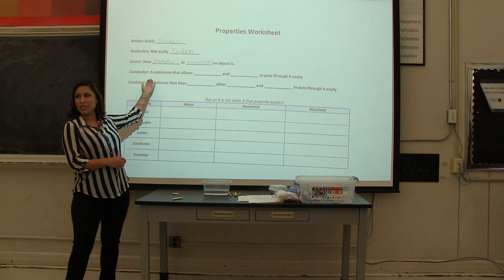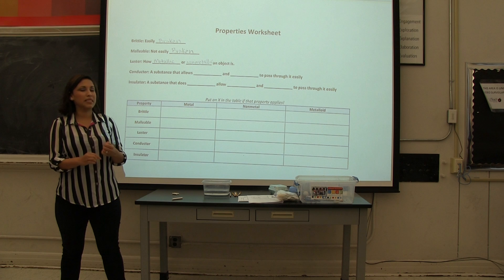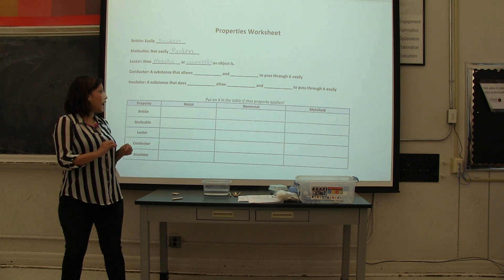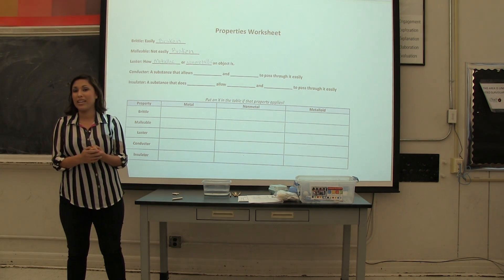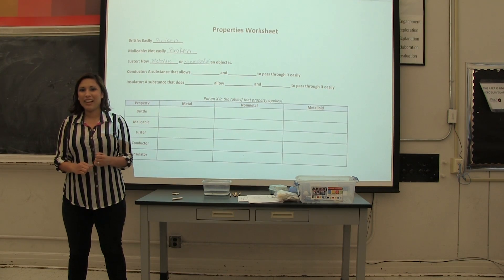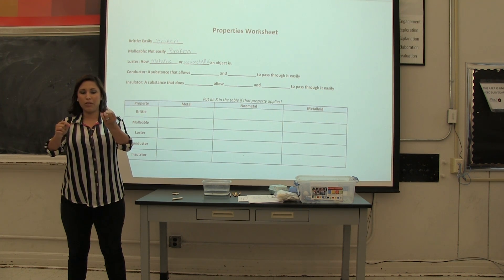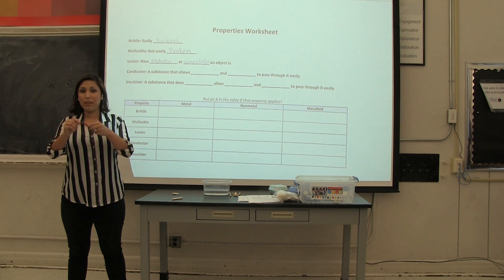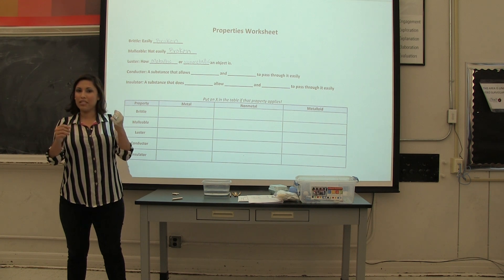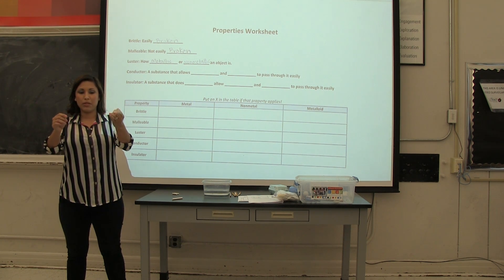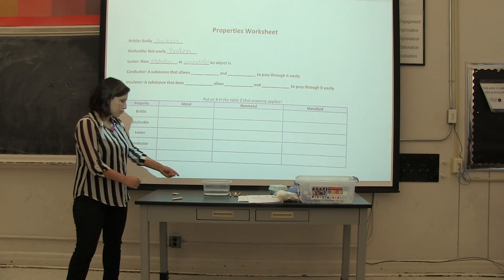All right, so our next vocabulary word is conductor. Can everyone say conductor with me? So conductor is a substance that allows heat and electricity to pass through easily. So turn and talk to your partners briefly for an example of a conductor. All right, Claire, what did y'all come up with? Metal. Metal, very good. So here, this copper wire I just showed you is a great conductor. So you probably notice something you plug in like your laptops, computers, maybe you're charging your cell phone, it has a metal similar to this copper wire for the electricity to flow through.